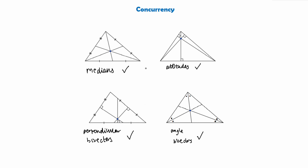In terms of knowing what to do when it comes to concurrency, you might be asked a question that says 'show that the three medians are concurrent,' in which case you need to work out the three equations and show that they all pass through the same point. Or you might just be told that the medians are concurrent and then work out one of the equations of the median. So if you see the word concurrent, you know it means that they all pass through the same point.